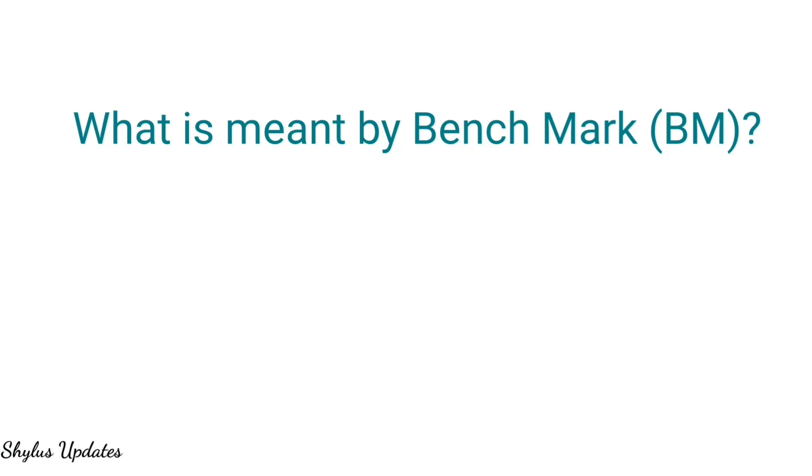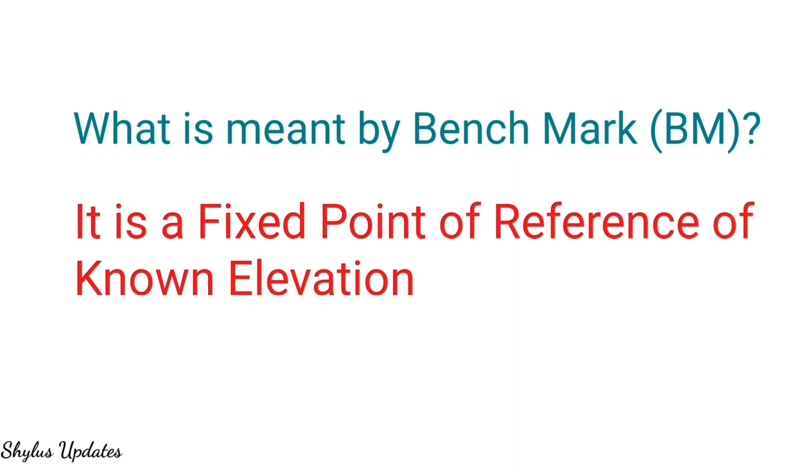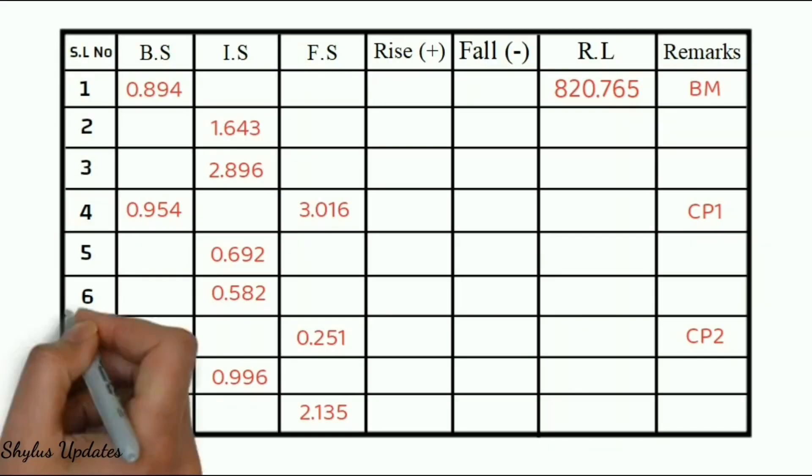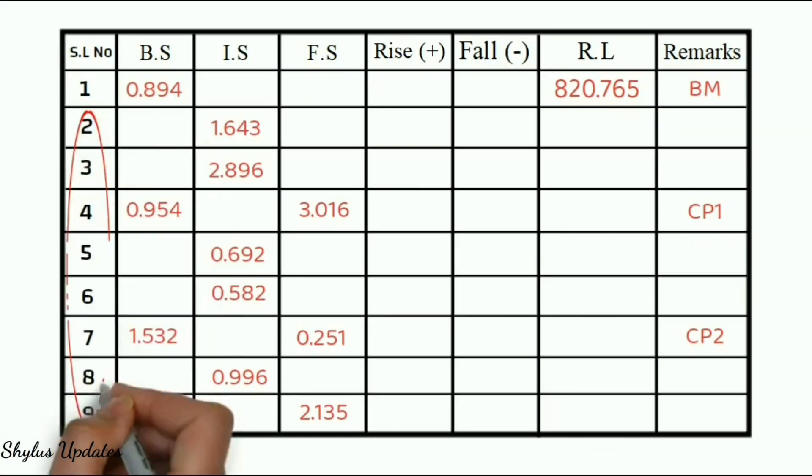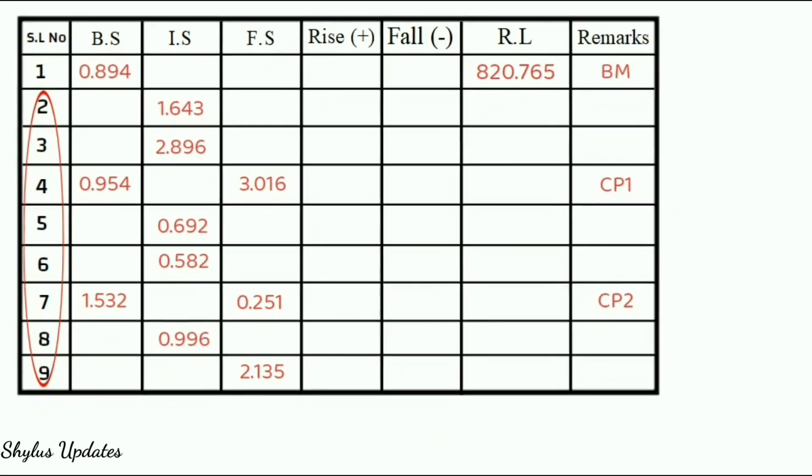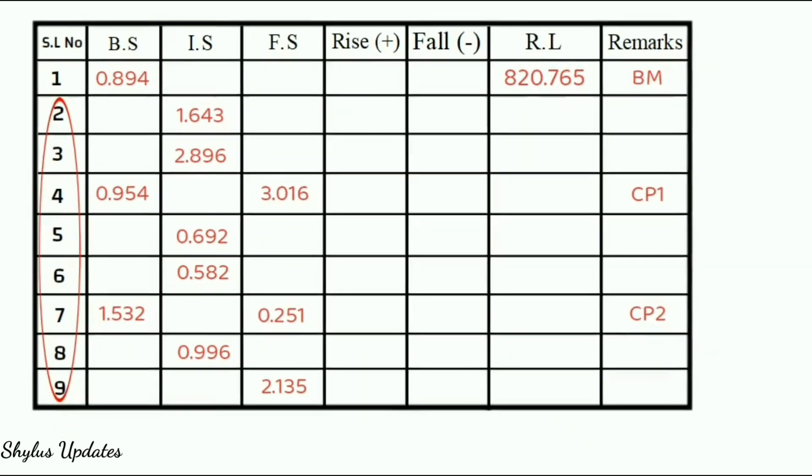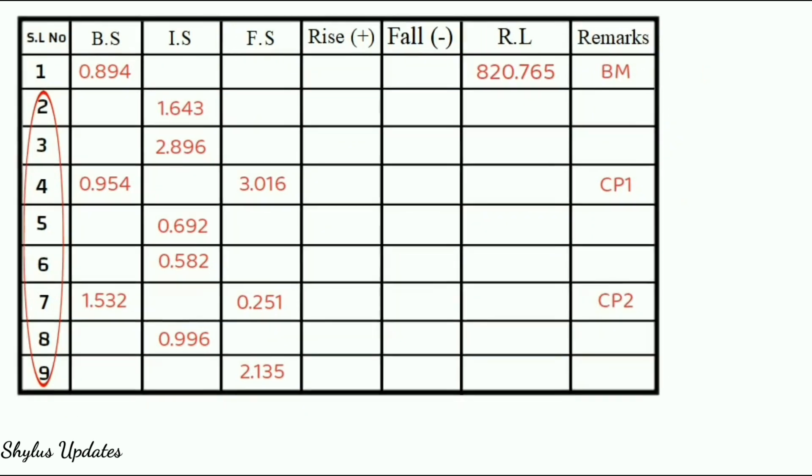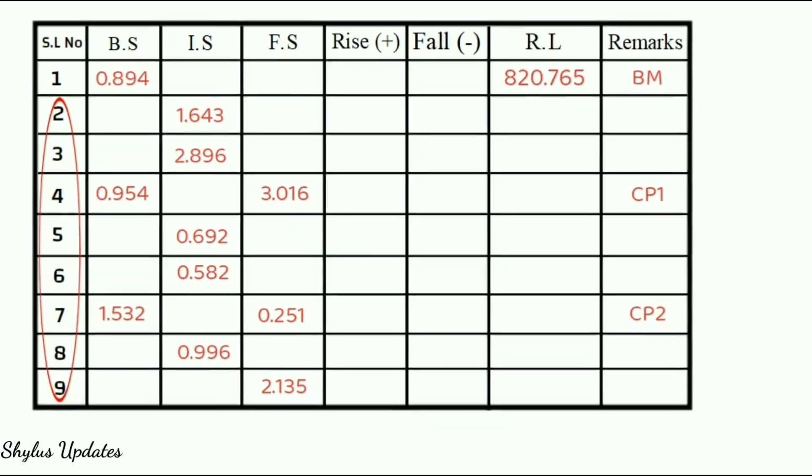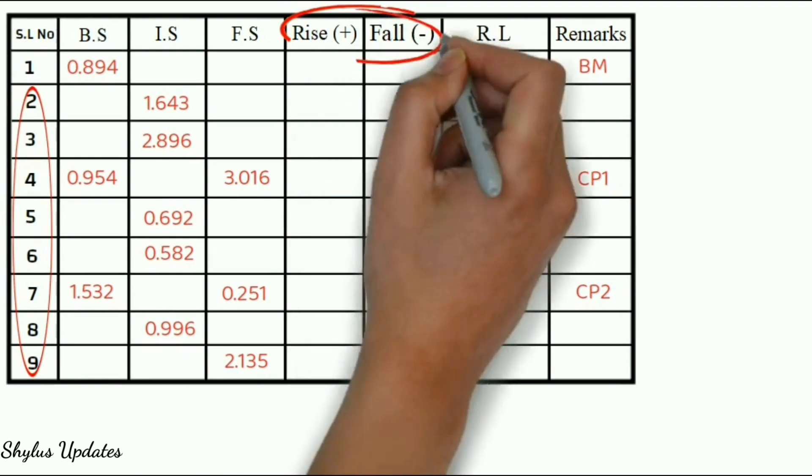Now, you may have a doubt that what is mean by this benchmark. It is a fixed point of reference of known elevation. Now, we have to find reduced level RL of remaining points that is from 2 to 9. Before finding reduced level RL of those points, we need to find rise and fall.